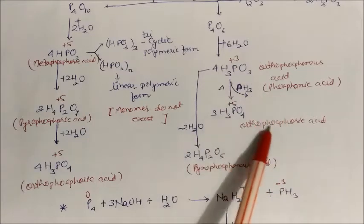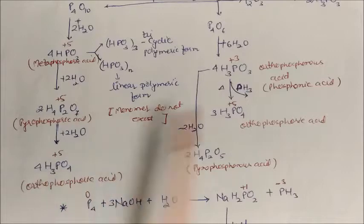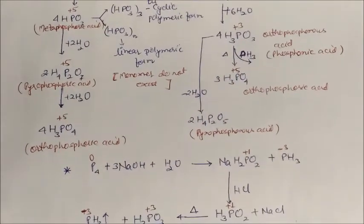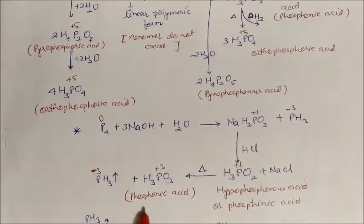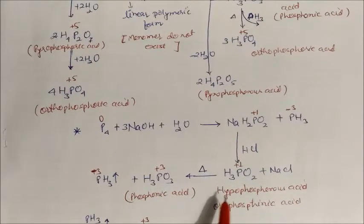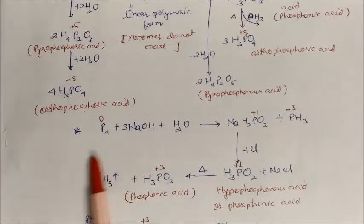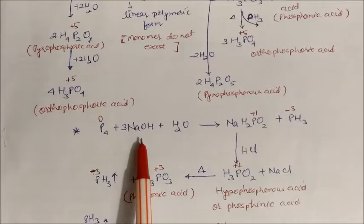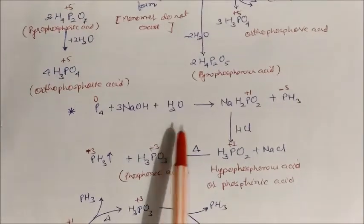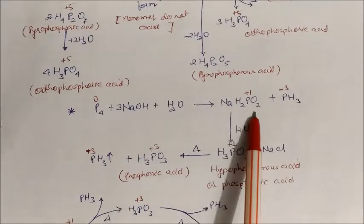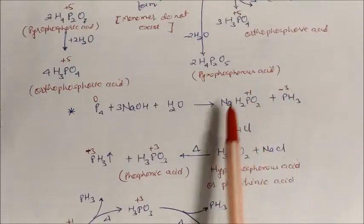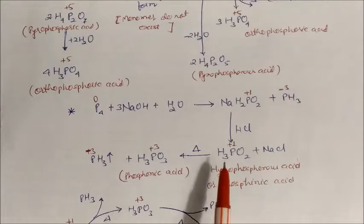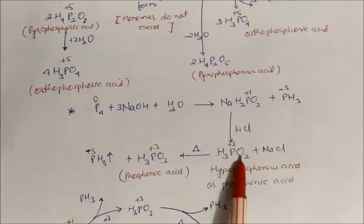From phosphine gas released from P₄O₆, we get orthophosphoric acid. We also have one more compound called hypophosphorous acid or phosphonic acid. If you take phosphorus and react it with an alkaline solution, you get the compound NaH₂PO₂ along with a released gas. Treating this in acidic medium converts it completely into H₃PO₂.